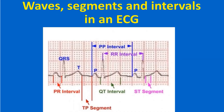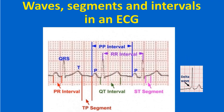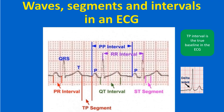Waves noted in a normal ECG are called P wave, QRS complex, T wave, and sometimes a U wave. Other waves which can be rarely seen are delta waves and epsilon waves. The P wave represents depolarization of the atria, while the QRS complex represents depolarization of the ventricles. The T wave is due to repolarization of the ventricles. The PR segment is between the P wave and the QRS complex, while the ST segment is between the QRS complex and the T wave. The TP segment, between the T wave and the next P wave, is considered the true baseline in the ECG.